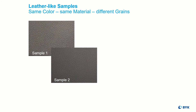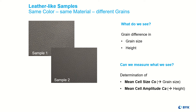Leather-like surfaces can look differently despite being made of the same material and color. The samples represent two different grains with different grain size and perceived grain height. Spectro 2 Profiler agrees with the visual impression and determines objective numbers for cell size and perceived cell amplitude.